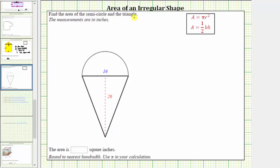We're asked to find the area of the semicircle and the triangle, and we're told the measurements are in inches. Let's go ahead and label this length 16 inches and this length 20 inches.